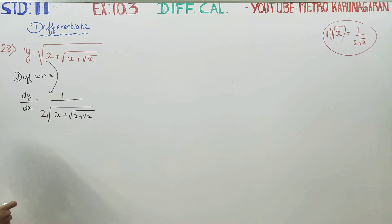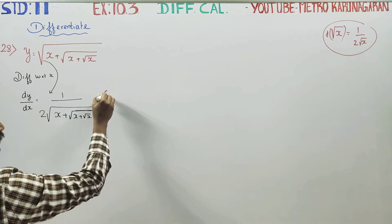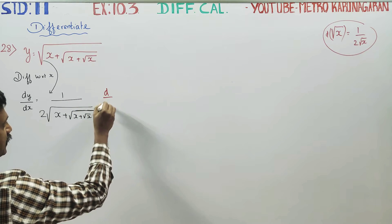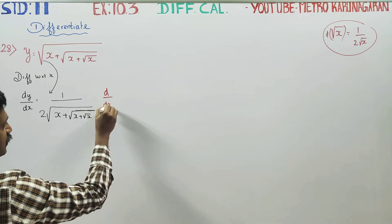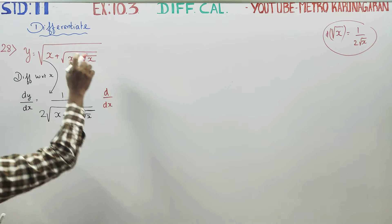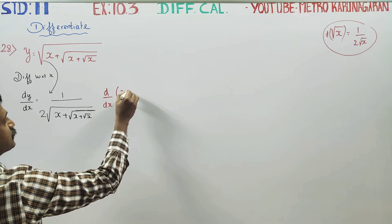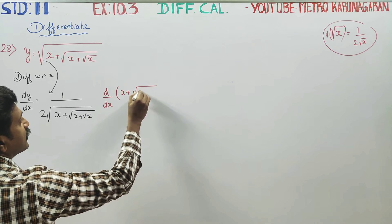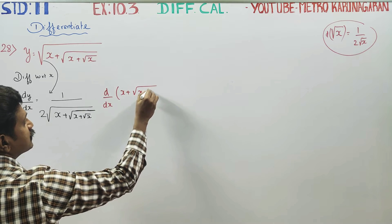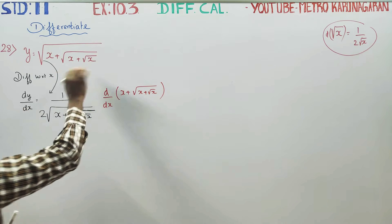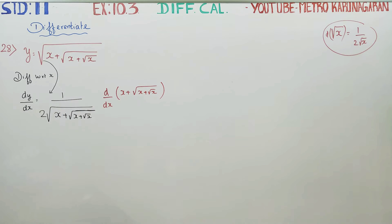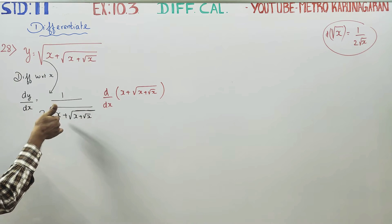1 by 2 root x — you are permitted to go inside. d by dx of... it is all the time to go inside. Permission of x plus root of x plus root x — it is all the time to go inside. Root x is the only differentiation.